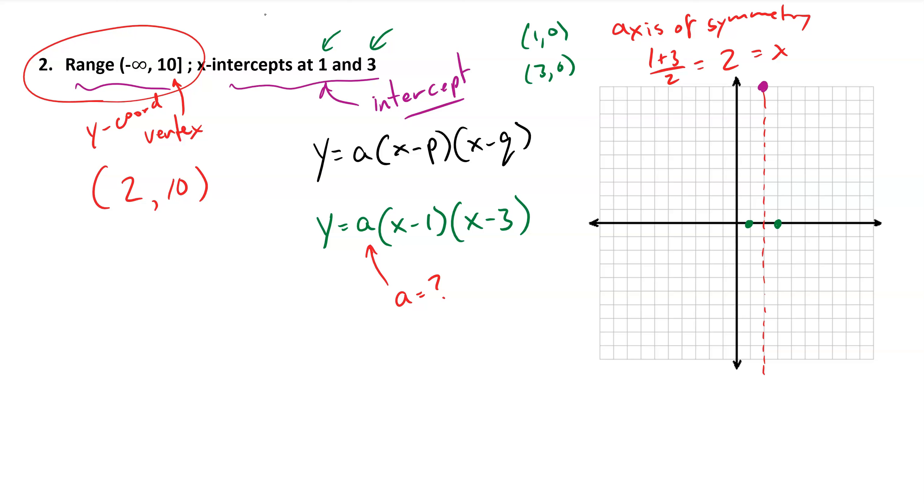So again, I know I have a parabola that opens downward, and it's going to be very narrow because the x-intercepts are very close together and the y-intercept is relatively far from those. So what we can do is a similar process to what we did before.